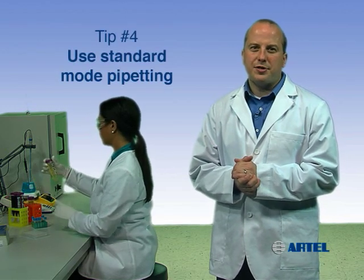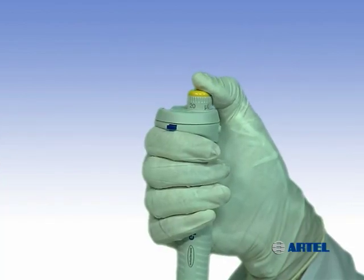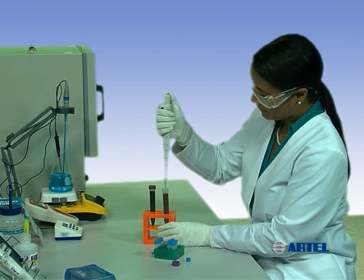For most sample transfers, use standard mode pipetting technique. When using standard mode, depress the plunger to the first stop. Immerse the tip into the sample and aspirate by releasing the plunger.